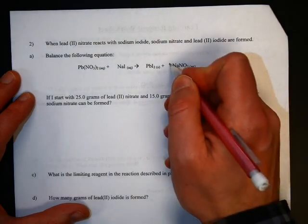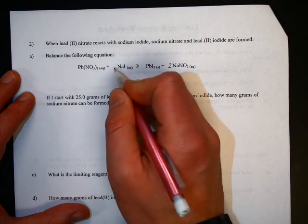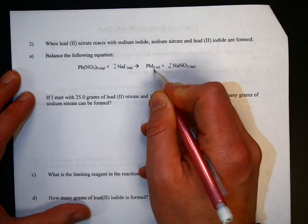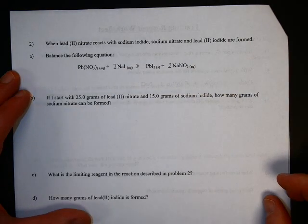So we've got two nitrates there, so put a two here. It gives you two sodiums, so put a two there. That gives you two iodines. You already have two iodines, and you already have one lead, so you're all set.